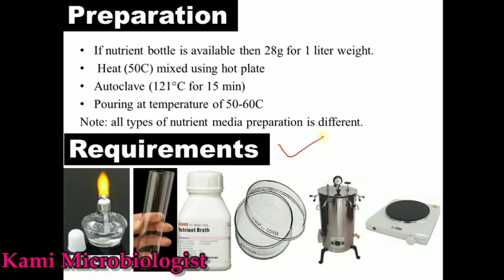For the preparation and requirements of nutrient agar media, you will need a spirit lamp, test tubes, a nutrient agar bottle, petri plates, an autoclave machine, and a hot plate. First, select the bottle — nutrient media is commercially available in powder form. Read the instructions on the bottle. For nutrient agar, 28 grams is required for one liter.